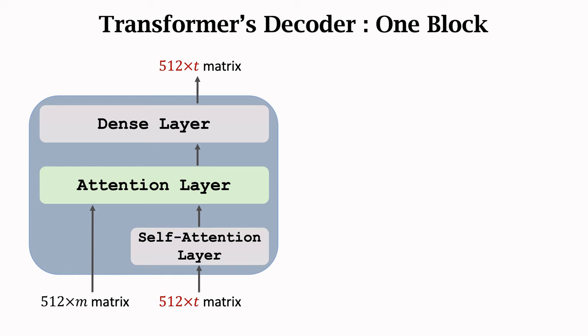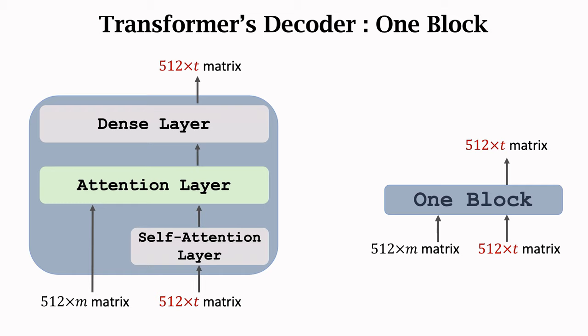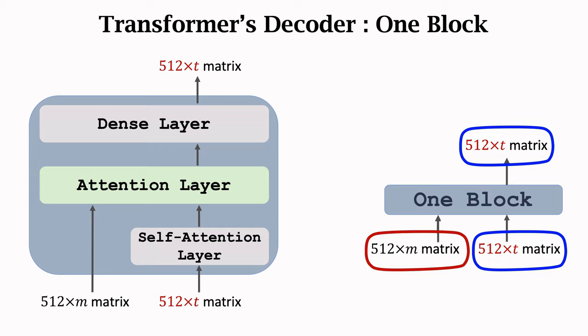The block maps two input sequences to one output sequence. The inputs are two sequences: the left is the output of the encoder network, and the right is the decoder's input sequence. The two sequences have different lengths, m and t respectively. The block has three layers: self-attention, attention, and dense. The output shape of the block matches the right sequence, both being 512 by t. We now have all the building blocks ready to build the transformer model.